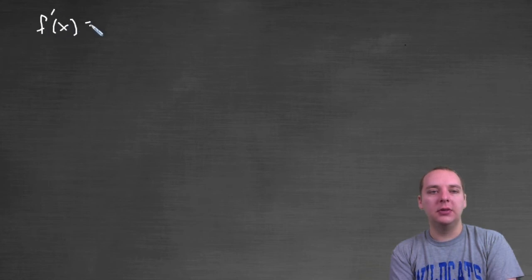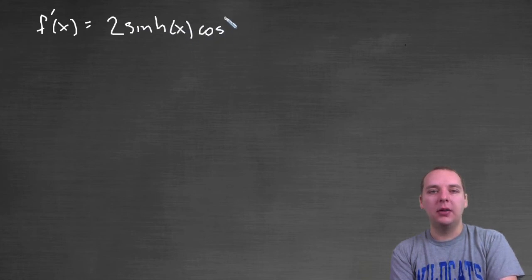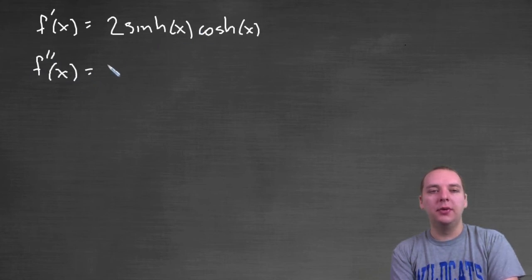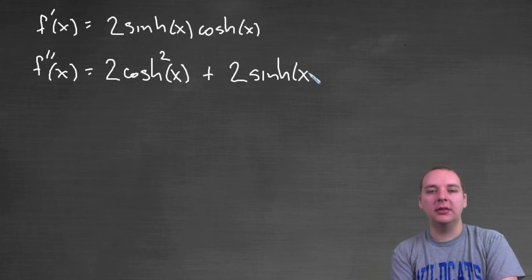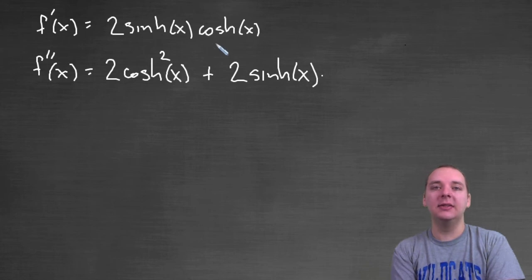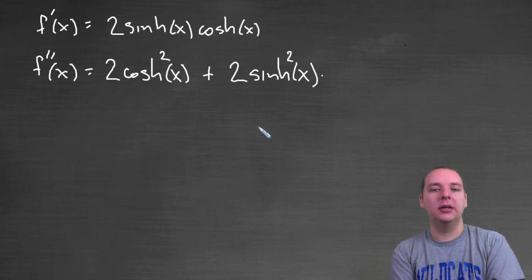Two hyperbolic sine of x, hyperbolic cosine of x. Let's take f double prime now. A product rule here: derivative of the first, two, derivative of hyperbolic sine will be hyperbolic cosine of x, times another hyperbolic cosine of x, which will make this squared, plus the first, two hyperbolic sine of x, times the derivative of the second. The derivative of hyperbolic cosine is hyperbolic sine, so that'll make that hyperbolic sine squared.